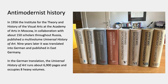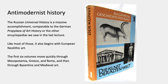First, Russian world art history. This was written in 1956 at the Institute for the Theory and History of the Visual Arts at the Academy of Arts in Moscow. It apparently involved a collaboration of about 150 scholars in Russia. Nine years later it was translated into German, which is the edition I've seen. In the German edition, it runs about 6,900 pages and it's eight really big volumes.